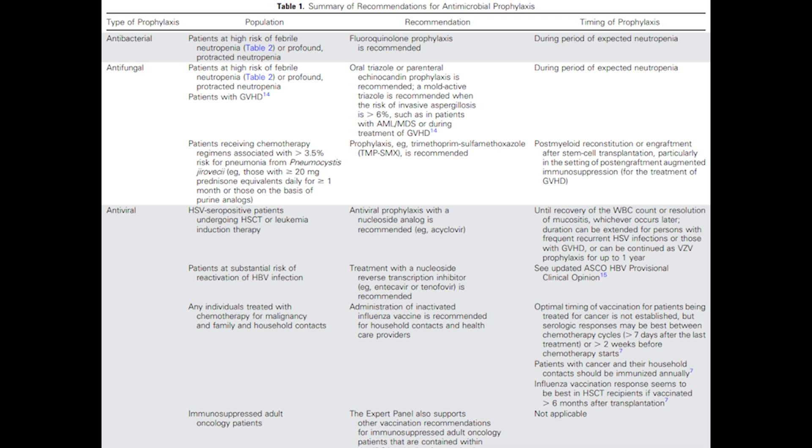Typically, patients with high-risk features are those with hematologic malignancies, and that's why they receive prophylaxis. In the end, the decision to put them on prophylaxis would be under the discretion of the hematologic oncology unit or service — it won't be your decision, at least if you're just a regular internal medicine resident.